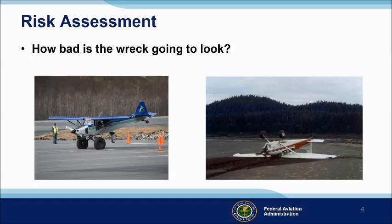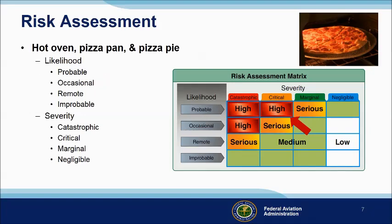The photo on the left shows a well-executed short-field landing at an annual Alaskan contest in Valdez. No airplanes were harmed in the filming of this event, and the landing was a success — no wreck. But the photo on the right shows another Alaskan landing on a beach. The combination of aircraft, pilot, and environment didn't work out optimally in this case, and if the pilot had assessed this result as likely, he might not have attempted the landing. But we were talking pizza, not planes. We have a hot oven, pan, and pie. How bad is the wreck going to look if we just reach in there and grab it?